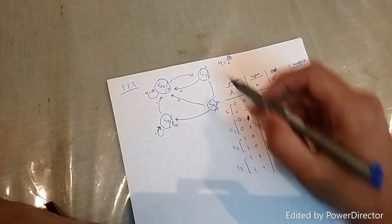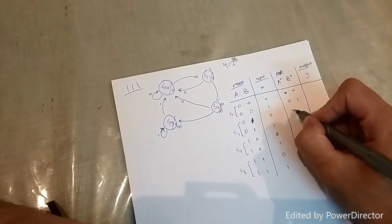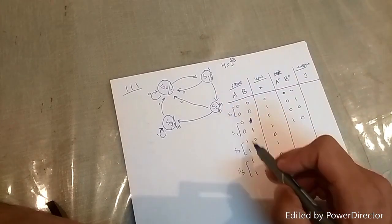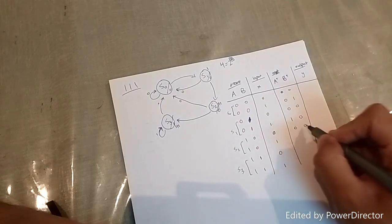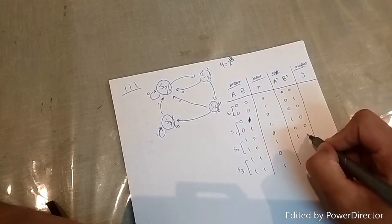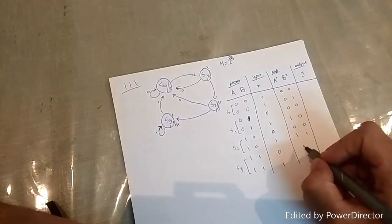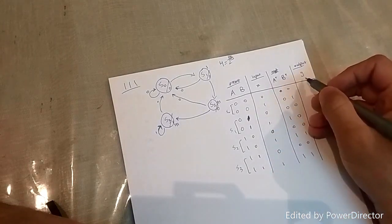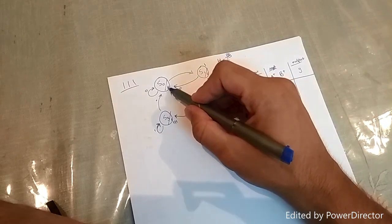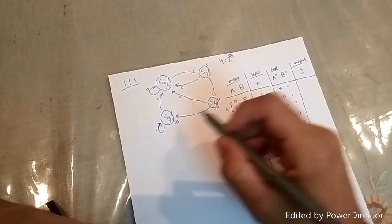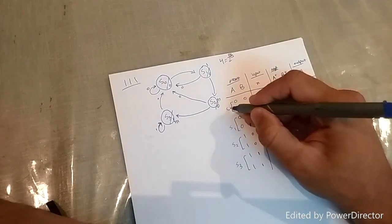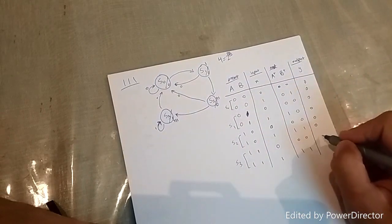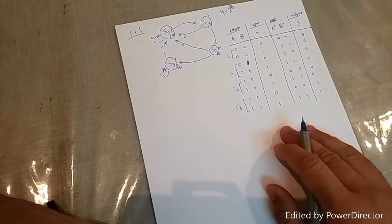For state 1 (01) with input 0, you end up back at state 0 (00). With input 1, you move to state 2. For state 2 (10) with input 0, you go to 00, and with input 1 you go to state 3 (11). If you input 0 at state 3, you go back to 00, and if you input 1 you stay at state 3. The outputs are: state 0 → 0, state 1 → 0, state 2 → 0, state 3 → 1.